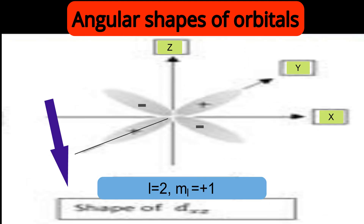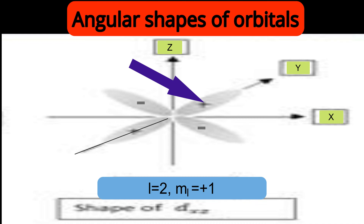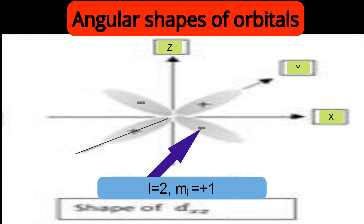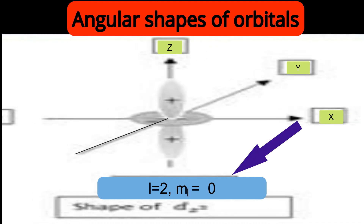Next, for l=2, ml=+1, it represents the dxz orbital. The lobes are not exactly along the x and z axes — they are in between the x and z axes, lying in the xz-plane. Again, alternate signs appear angularly — right-side-up lobe positive, left-side-up negative, left-side-down positive, right-side-down negative — but opposite lobes share the same wave function phase.